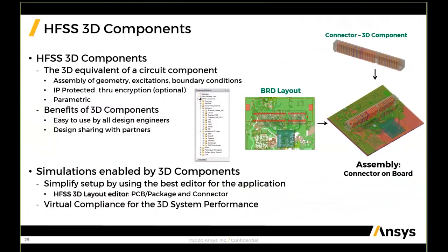We will continue assembling our full 3D system by combining and introducing a connector and a portion of a motherboard. To enable this, we introduce the concept of HFSS 3D components. HFSS 3D components are the equivalent of circuit components — think of them as black boxes or models that contain the geometry, excitations, material properties, and boundary conditions. If needed, they can be IP-protected. This concept exists in MCAD HFSS workflow for several versions, and there is an extensive 3D component library that comes with the basic installation.